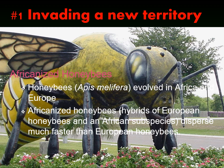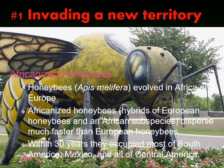It turns out Africanized honeybees disperse and move across the landscape much faster than European honeybees. When researchers were conducting experiments in Brazil and keeping these bees in tight control, someone forgot to replace the guards on the hive entrance — guards that were too small for queens to pass through. Queens escaped from these experimental hives in Brazil, and within 30 years they had occupied most of South America, Mexico, and all of Central America. These guys spread extremely fast — a very unusual dispersal rate.